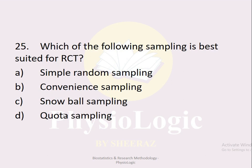MCQ number twenty-five: Which sampling is best suited for an RCT (randomized control trial)? Option a simple random sampling, option b convenient sampling, option c snowball sampling, option d quota sampling. The correct option is option a, simple random sampling. For RCT the sampling must be random, and simple random sampling is a type of probability sampling.